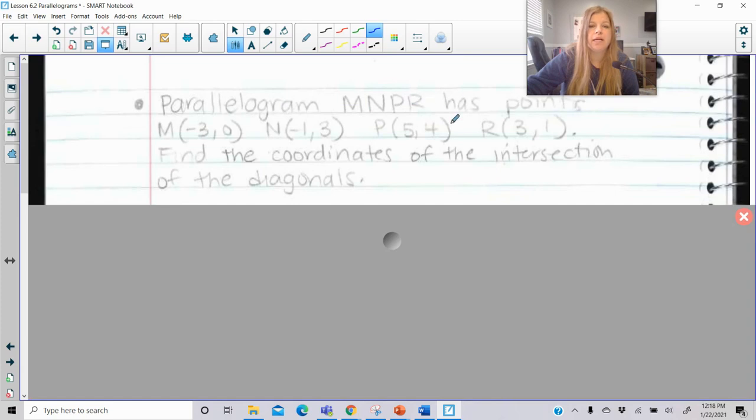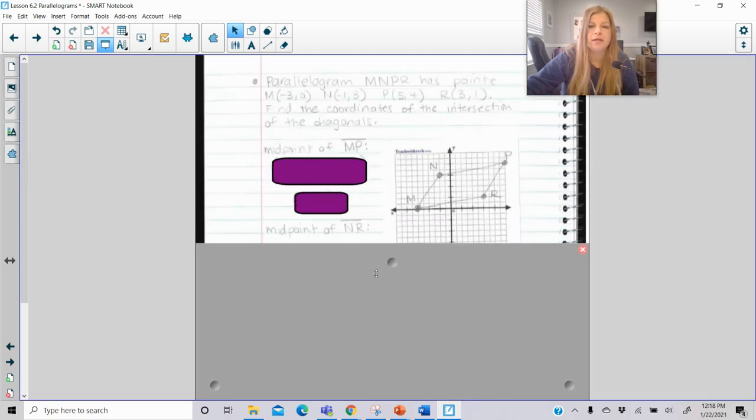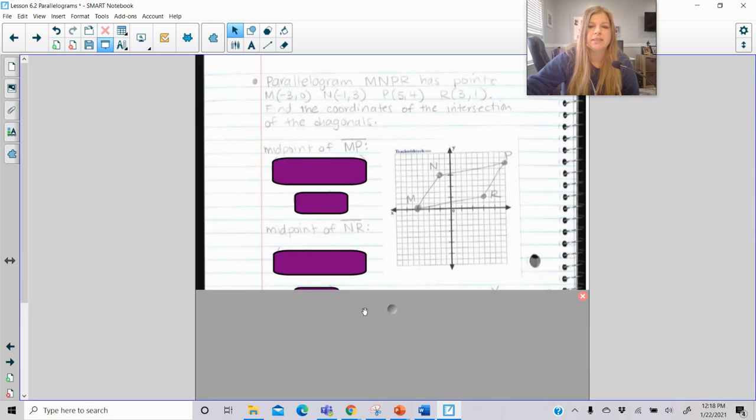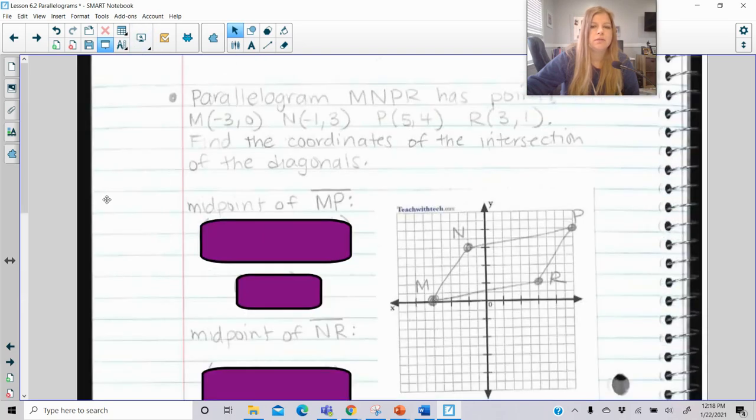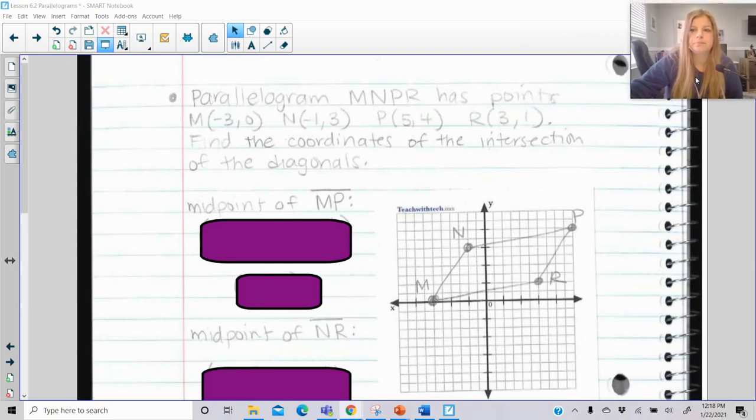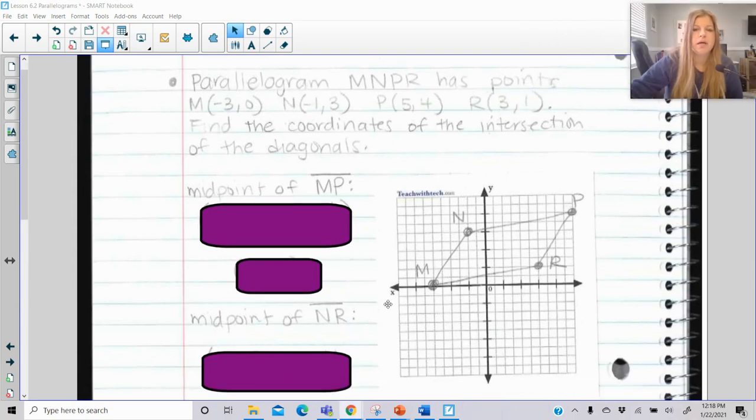Parallelogram MNPR has points negative 3, 0, negative 1, 3, 5, 4, and 3, 1. Find the coordinates of the intersection of the diagonals. So it's always helpful, of course, to do any kind of coordinate plane problem by graphing. So I went ahead and I did a sketch of what this looks like. I'm going to zoom my screen in just a bit more for us. Okay. That looks good.